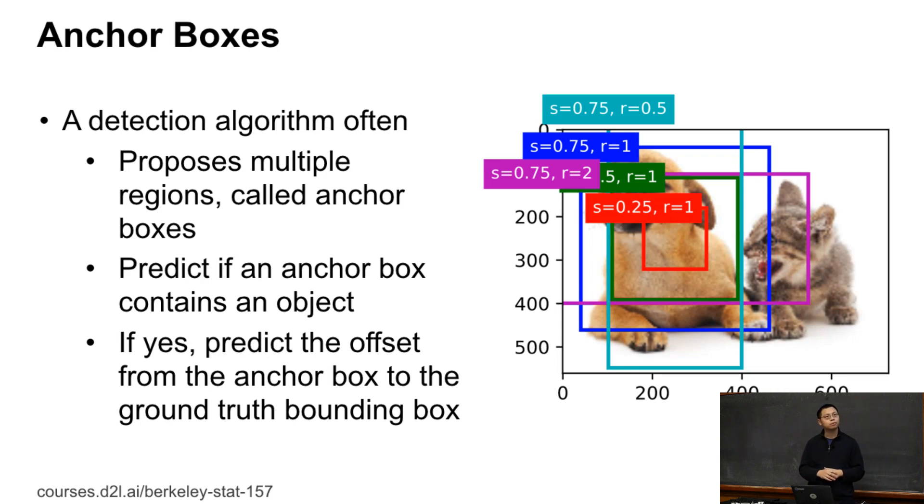Question: How many anchor boxes does the network usually propose? Depends on algorithms. For example, SSD proposes 10,000 anchor boxes for each image. For different algorithms like the RCNN family, it also proposes thousands of anchor boxes, but does refinement to reduce to maybe hundreds. Faster algorithms try to reduce the number of anchor boxes. The more you propose, the better coverage you get because you can cover all these objects. But the more you have, the more expensive computational time. This is a trade-off.